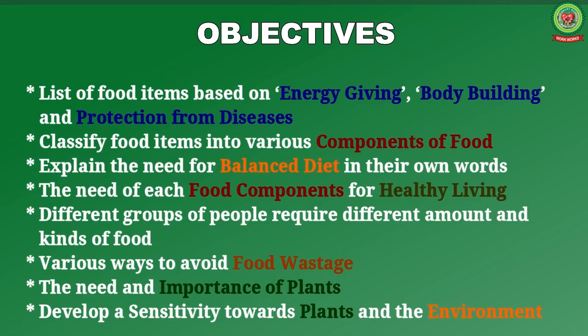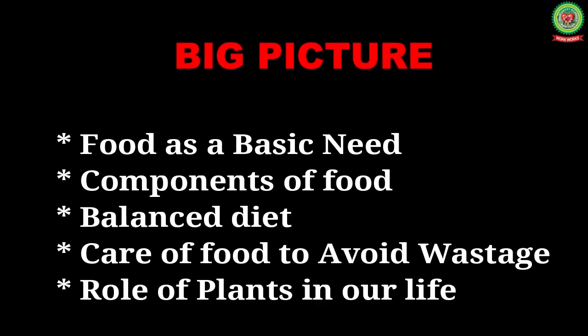Other objectives include: explaining in their own words the need of each food component for healthy living; understanding that different groups of people require different amounts and kinds of food; various ways to avoid food wastage; the need and importance of plants; and developing a sensitivity towards plants and the environment. In this chapter we will also study about food as a basic need, components of food, balanced diet.